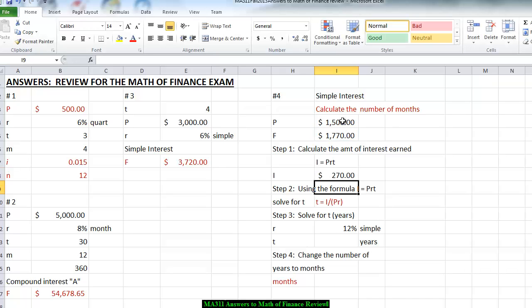So that tells us over T years, we earn $270 in interest. Now, using the formula I equals PRT, we want to solve for T. Dividing both sides by PR, we notice that T is equal to the interest divided by the principal times the interest rate. So remember, we have an interest rate of 12%. Therefore, using the formula T years is going to be the interest of $270 divided by open parentheses, the principal of $1,500 times the 12% interest. And therefore, we know that it took one and a half years to get that particular interest.